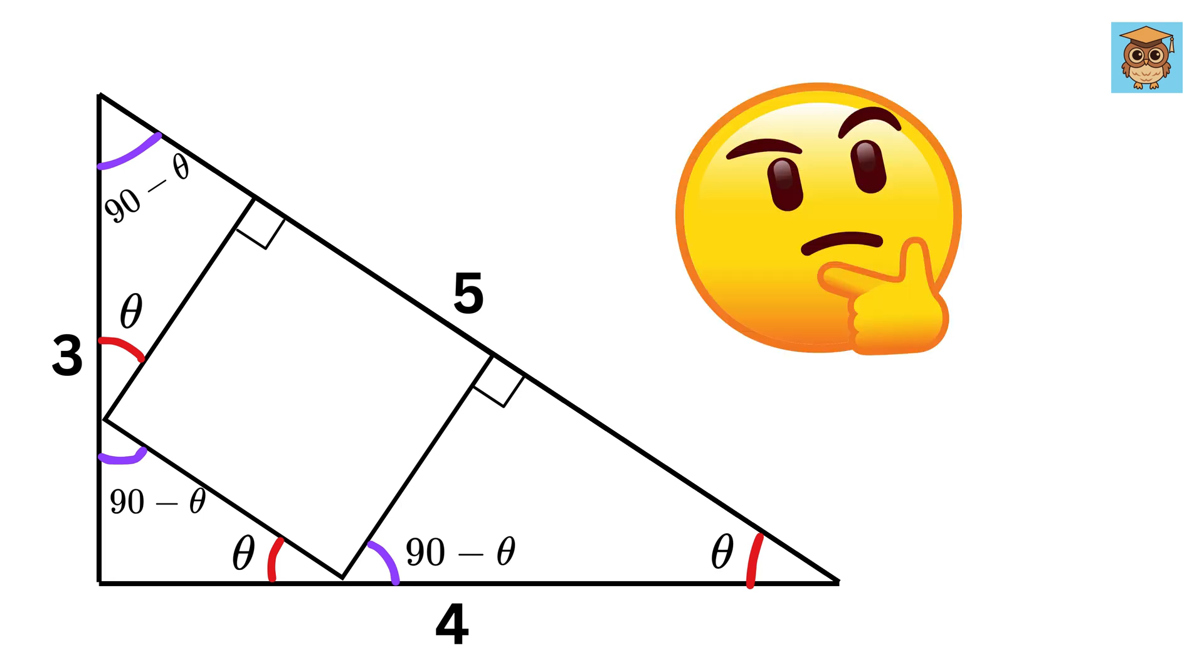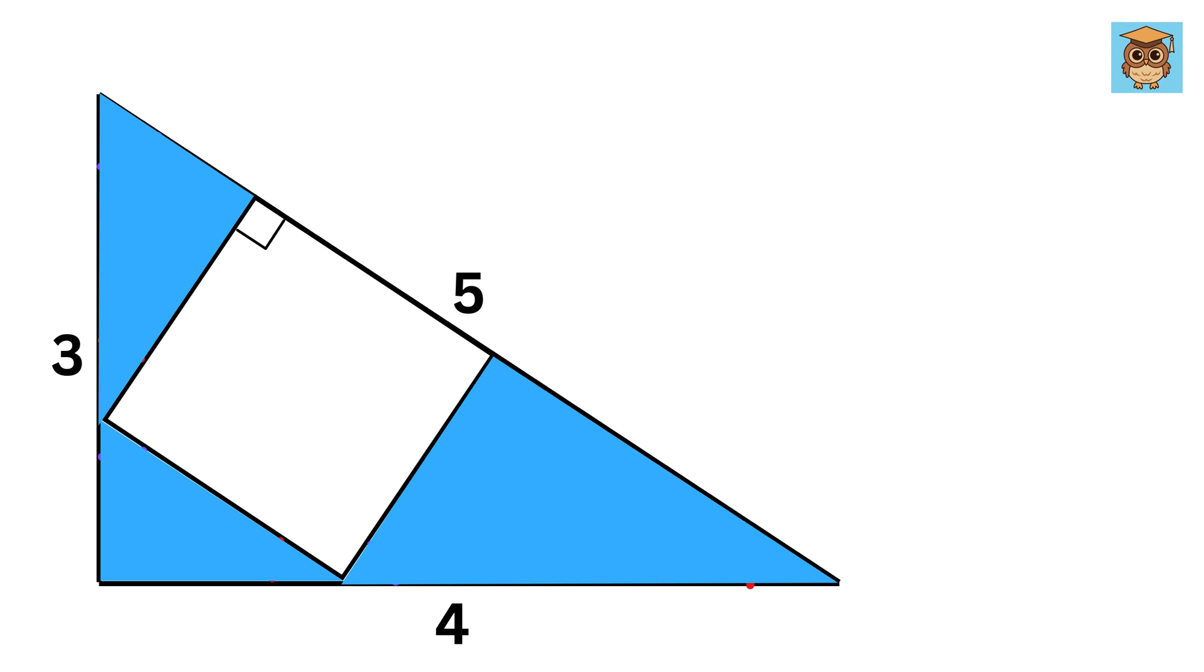So, why are we doing this? It's simple, because now we can see that all these 3 triangles are similar to each other, and they are also similar to our big 3, 4, 5 right triangle. Great!